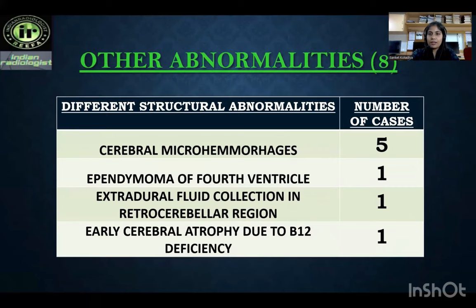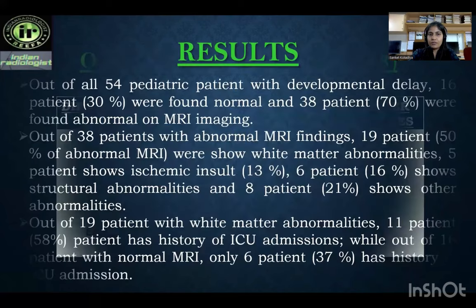Other abnormalities include cerebral microhemorrhages, ependymoma of the fourth ventricle, extradural fluid collection in the retrocerebellar region, and early cerebral atrophy due to biotinidase deficiency.